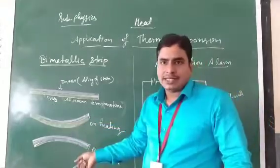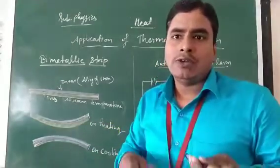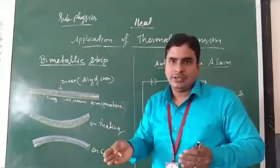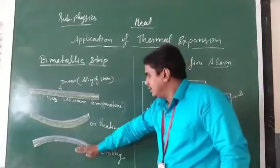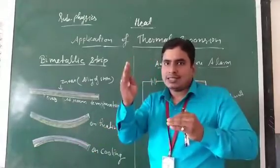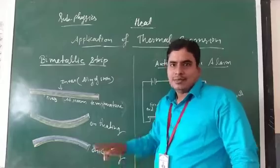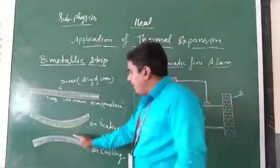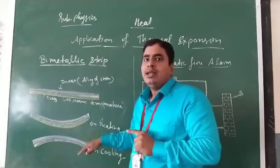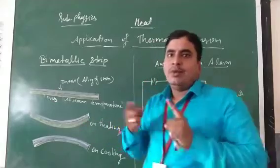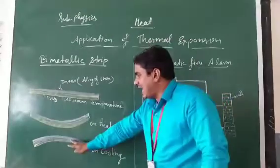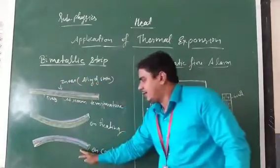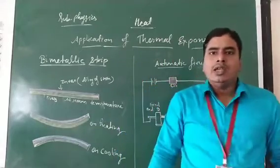Now on cooling — what will you observe? On cooling, the shape of the bi-metallic strip changes. The iron bends outwards and the brass metal bends to the inner side. So during the cooling process the bi-metallic strip bends again, but this is a reversible process. Both strips bend in the reverse way: the iron bends to the outer side and the brass bends to the inner side on cooling.